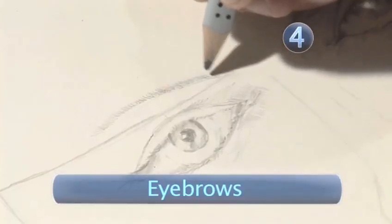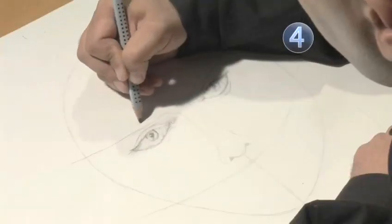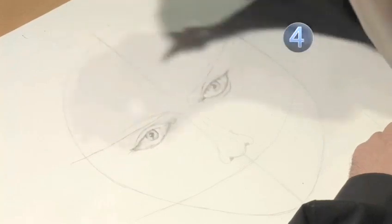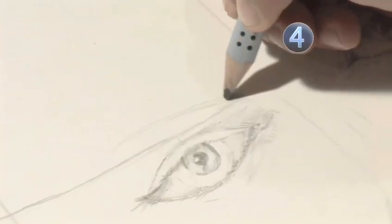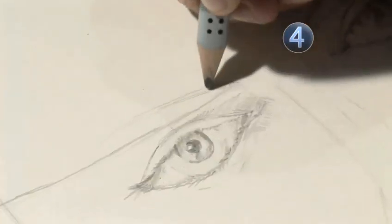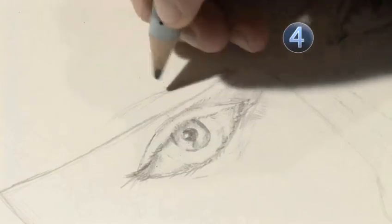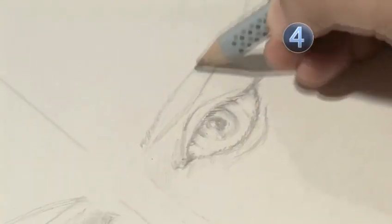Step 4: Eyebrows. Draw the upward arch of the eyebrow resting on the top guideline. It should extend beyond the length of the eye at both the inner and outer points. Using short, upward strokes, draw the hairs of the eyebrow along the arch. In this case, it's a thin, feminine eyebrow. Draw the other eyebrow using the same method.